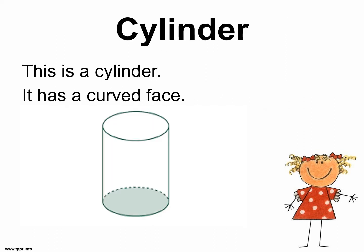Cylinder. This is a cylinder. It has a curved face. When you look at something that is a cylinder, you see that bigger curved face going around it — it can roll like a barrel.